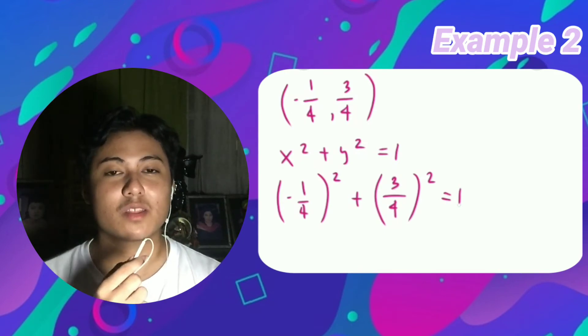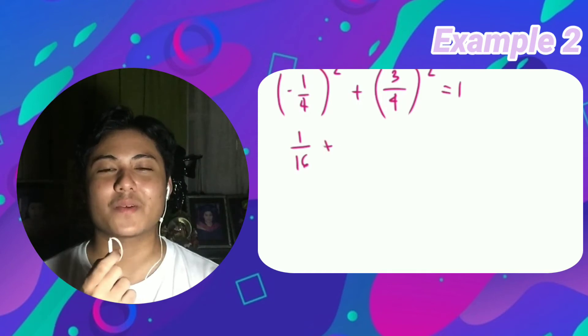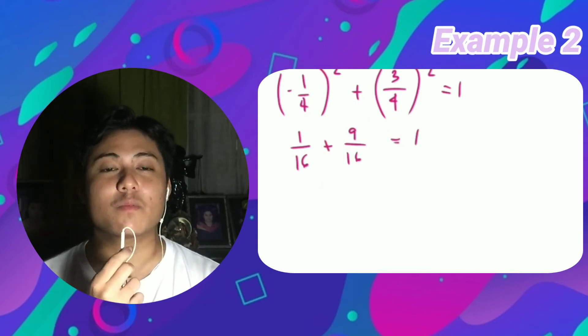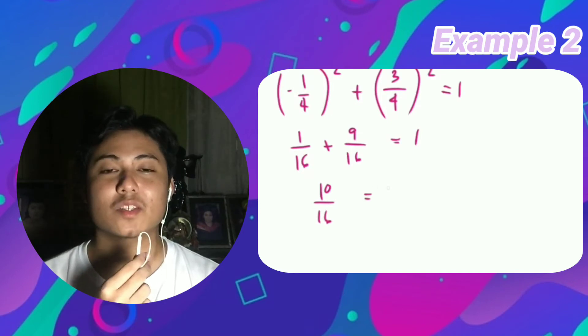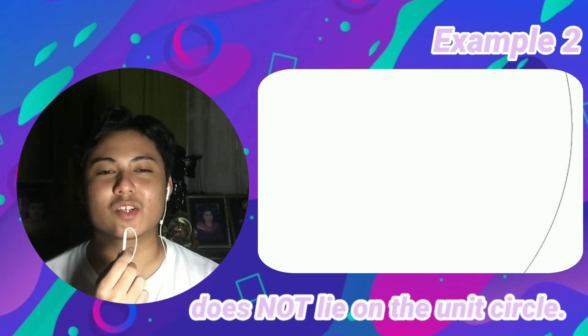So right after we evaluate, the equation becomes 1/16 + 9/16 = 10/16. And 10/16 does not equal 1. If we convert it to decimal, 10/16 becomes 0.63, and 0.63 is not equal to 1. Therefore, the point (-1/4, 3/4) does not lie on the unit circle.